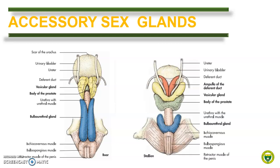In the horse, all four male accessory sex glands are present. It has a well-developed ampullary gland and a relatively large and hollow vesicular gland with a thick muscular wall and a smooth surface. The prostate gland is composed only of the compact part, consisting of two lateral lobes joined by a narrow isthmus that crosses the dorsal aspect of the urethra close to the neck of the bladder. The paired bulbo-urethral gland projects laterally and has a size of a walnut.